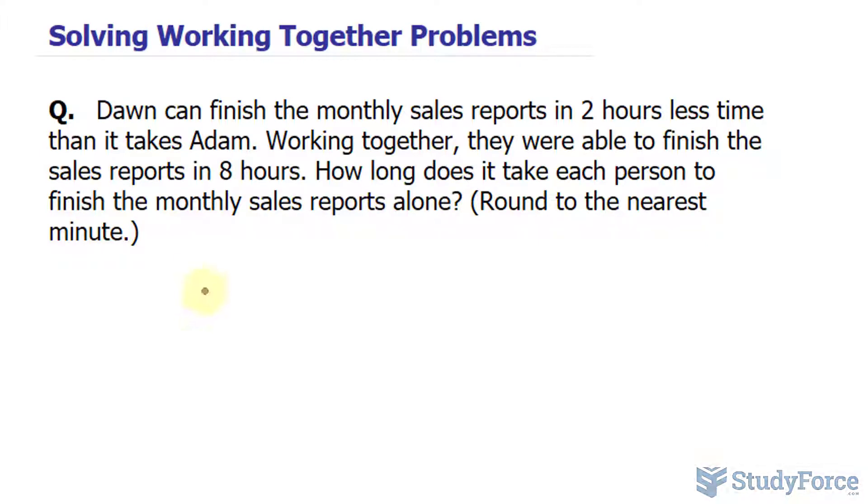Let's start by setting t as the number of hours it takes Adam to finish the sales reports on his own. We're also told that Dawn finishes these a little faster than Adam. So I'll say that the time it takes Dawn is t minus two, because it takes him or her two less hours than Adam.